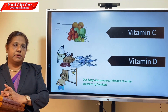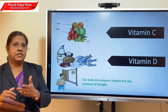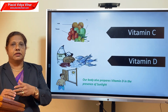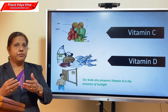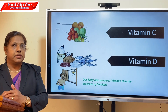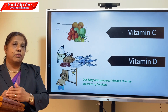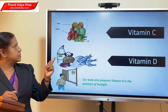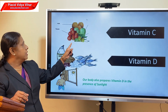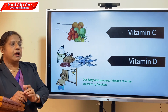Now we can move on to vitamin C. Vitamin C helps our body to fight against diseases. In these COVID days, we continuously hear that we have to take food items rich in vitamin C because it boosts our immunity, and thus we can prevent the attack of coronavirus. Vitamin C is present in tomato, orange, lemon, and amla.